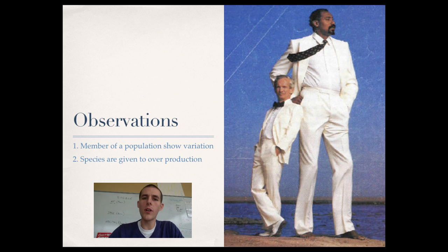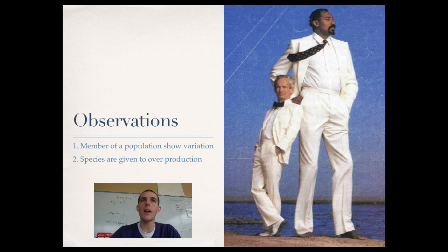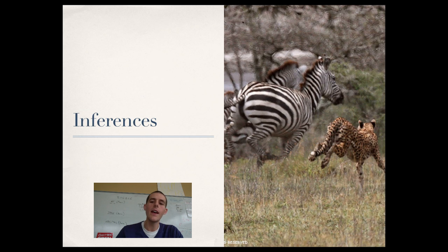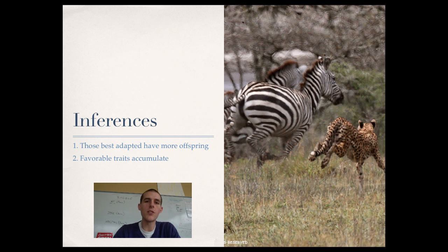To sum up Darwin's work: he made thousands of observations, but there are two major ones important to his theory of descent with modification. First, members of a population show variation — if an animal has many babies, none will be alike. Second, species are prone to overproduction: if left to their own devices, most animals will produce more offspring than the environment can support. He recognized that resources are limited. He used these two observations to make two major inferences upon which his theory of natural selection is founded.